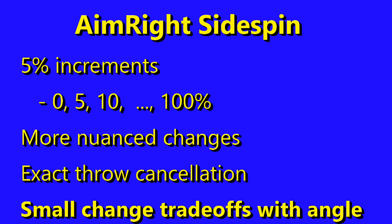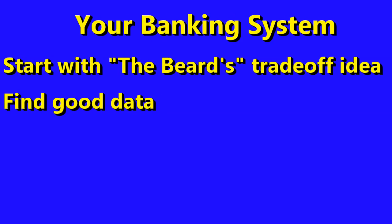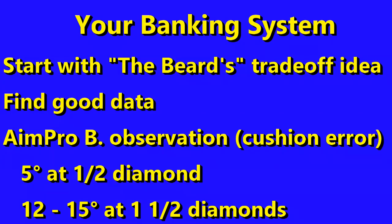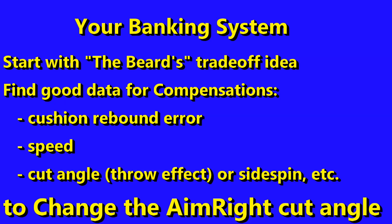Kohler's Science of Pocket Billiards gives tables and graphs of data showing how various factors affect the bank. On tables I play on, to adjust for cushion rebound error for banks near the pocket — like half a diamond away — at medium speed, I need to add about 5 degrees towards the pocket. By one and a half diamonds away, I need to add 12 to 15 degrees, or less when the ball is further from the rail. Then you need to adjust for different speeds, the object ball's spin based on the cue ball's spin or the cut angle, and distance from the rail. Study bank experts and try your own experiments.